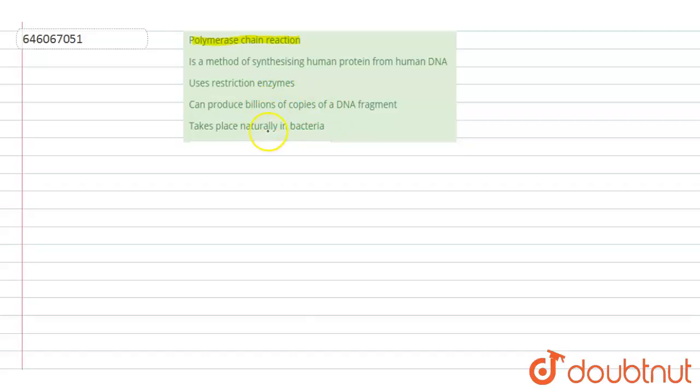So if you'll see the Polymerase Chain Reaction, it is also in short form called as PCR. Polymerase Chain Reaction or PCR is one of the techniques that is used for making multiple copies of DNA.